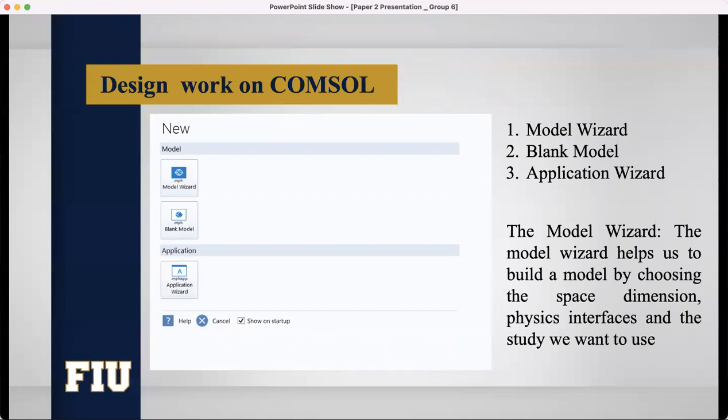Now, the main design procedures that we have followed in our project. If we open the COMSOL Multiphysics, this will be the first phase. And here, we can see three different tabs. First one is model wizard, then blank model, and then application wizard. We will select the model wizard. The model wizard actually helps us to build a model by choosing the space dimension, physics interfaces, and study we want to use.